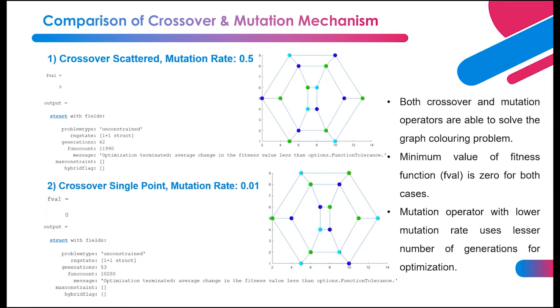As seen from the results of the two cases, the crossover and mutation operations in both cases are able to solve the graph coloring problem. The colors assigned to the vertices are different in both cases, but it ensures two adjacent vertices are not the same color. Minimum value of fitness function (fval) is zero for both cases, which indicates it is the best chromosome. Besides, mutation operator with lower mutation rate uses lesser number of generations for optimization.